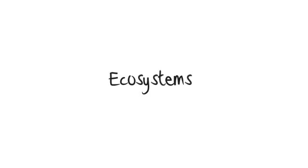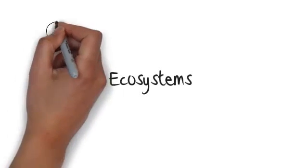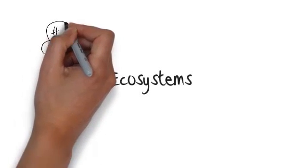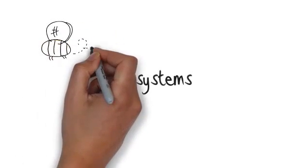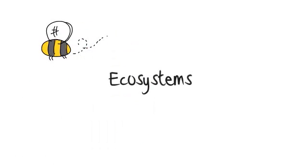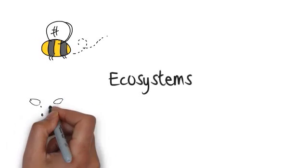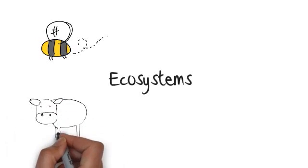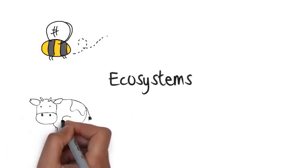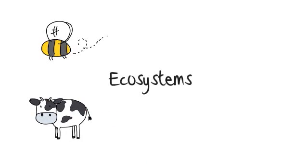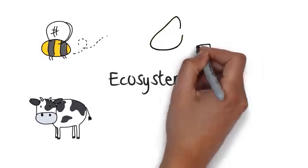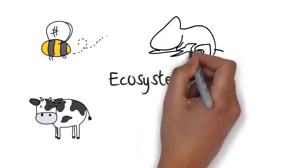Ecosystems. An ecosystem is a community of living and non-living things that work together and sustain each other in an environment. Organisms and their surroundings support each other and allow life to coexist.